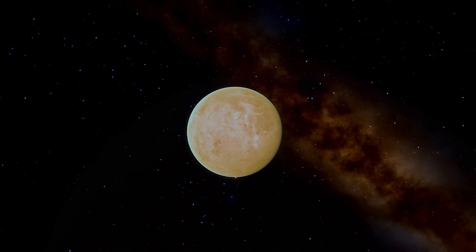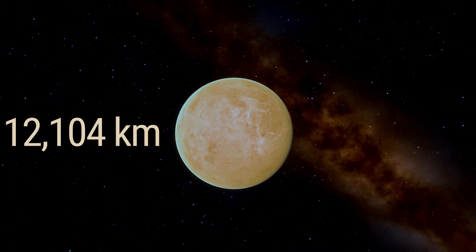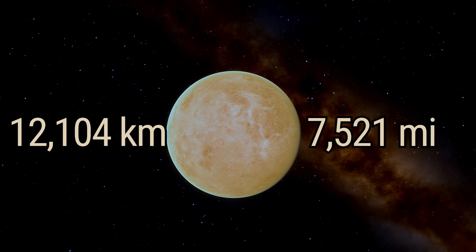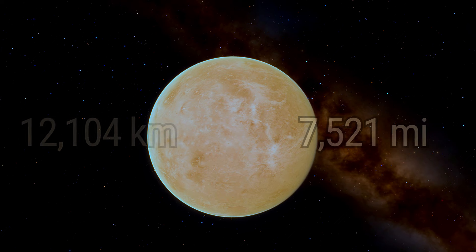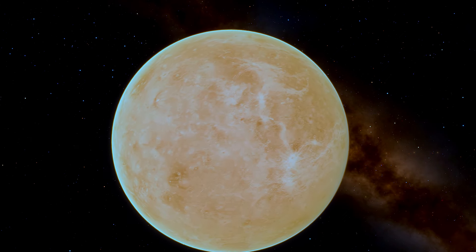Venus is nearly the twin of Earth in size, with a diameter of 12,104 kilometers, or 7,521 miles. But don't let its size fool you. Venus is a world of extremes.